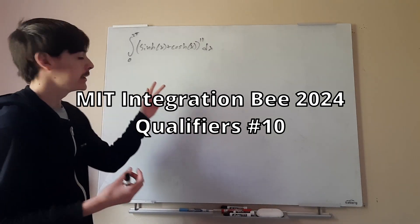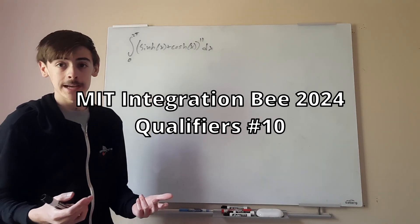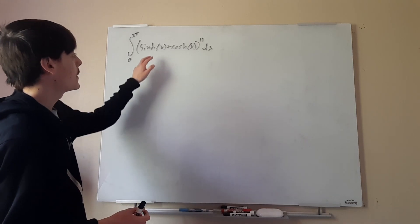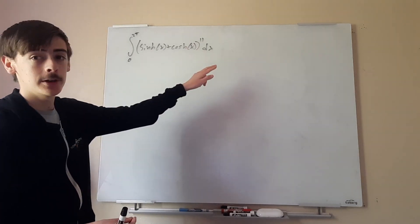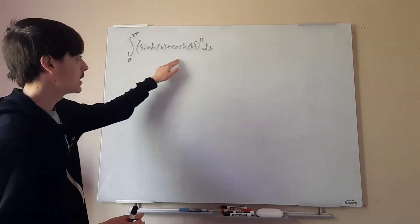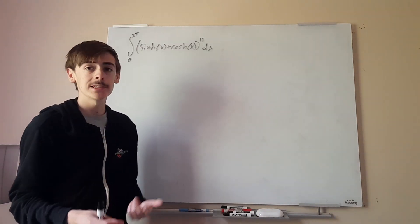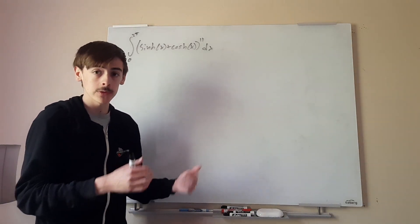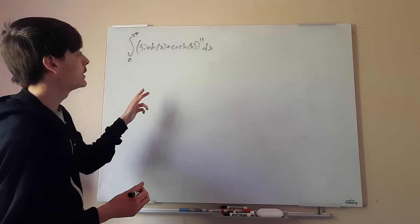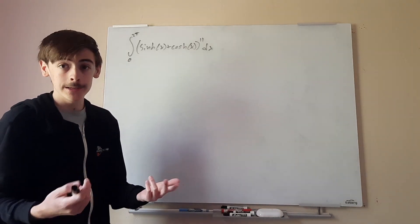Alright, today's integral. If you just look at it really quick, you might think it's the same integral as last week. However, this time instead of sin(x) + cos(x) to the 11th, we have sinh(x) + cosh(x) to the 11th. So essentially hyperbolic trig of last week's integral. Now this one's a little weird, but it's actually a lot easier than last week.